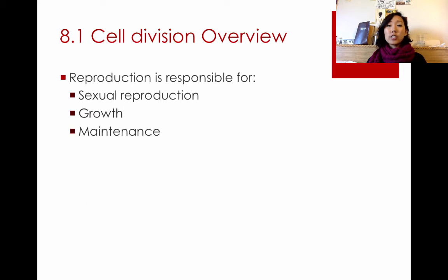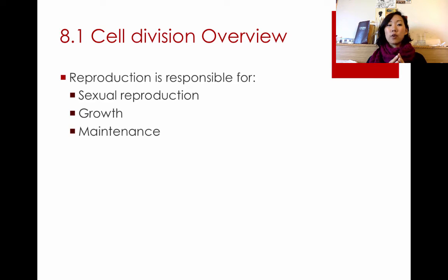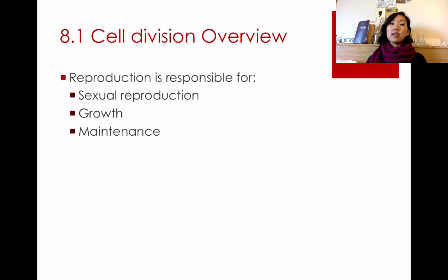Reproduction is responsible for a lot of different things. Beyond sexual reproduction, there's also the need for growth and maintenance of cells. For organs to grow, for your body to grow, for you to get taller, your cells need to reproduce and divide. Maintenance means that cells break down and die, and certain types of cells can reproduce and divide to replace those old dead cells.